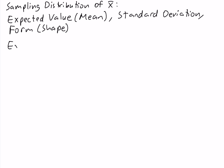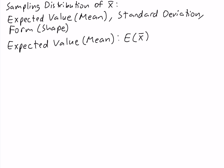First, the expected value or mean of the sampling distribution of the sample mean, which we write as E(x-bar), is equal to mu, which is the population mean. So in other words, the mean of the sample mean is simply equal to the population mean.